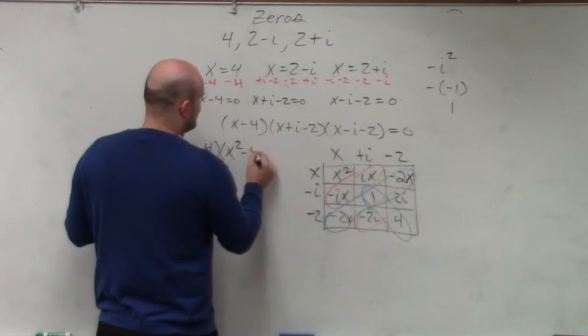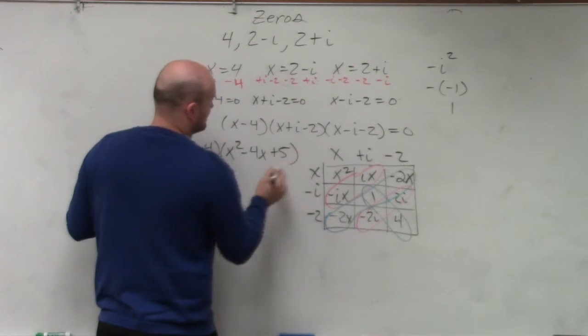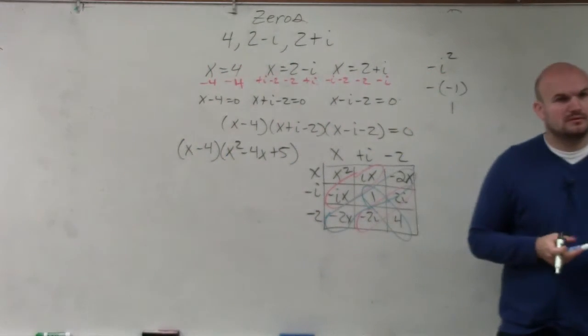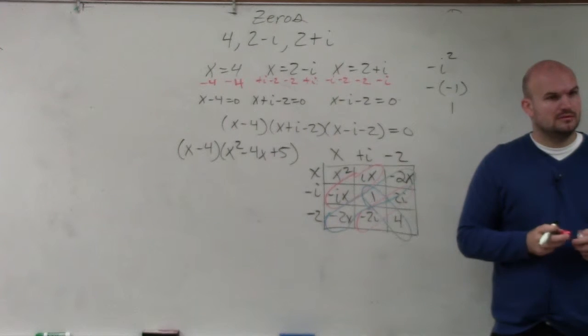And then these combine to 5. So it's minus 4x plus 5. Does everybody see that?